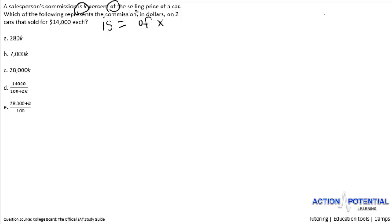We can go ahead and take this first sentence and put it into an equation format. A salesperson's commission, which I'm going to call C, is equal to K percent of the selling price of a car. 'Of' we know is multiplied by, and we'll call the selling price P. So our equation then is C equals K percent times P.